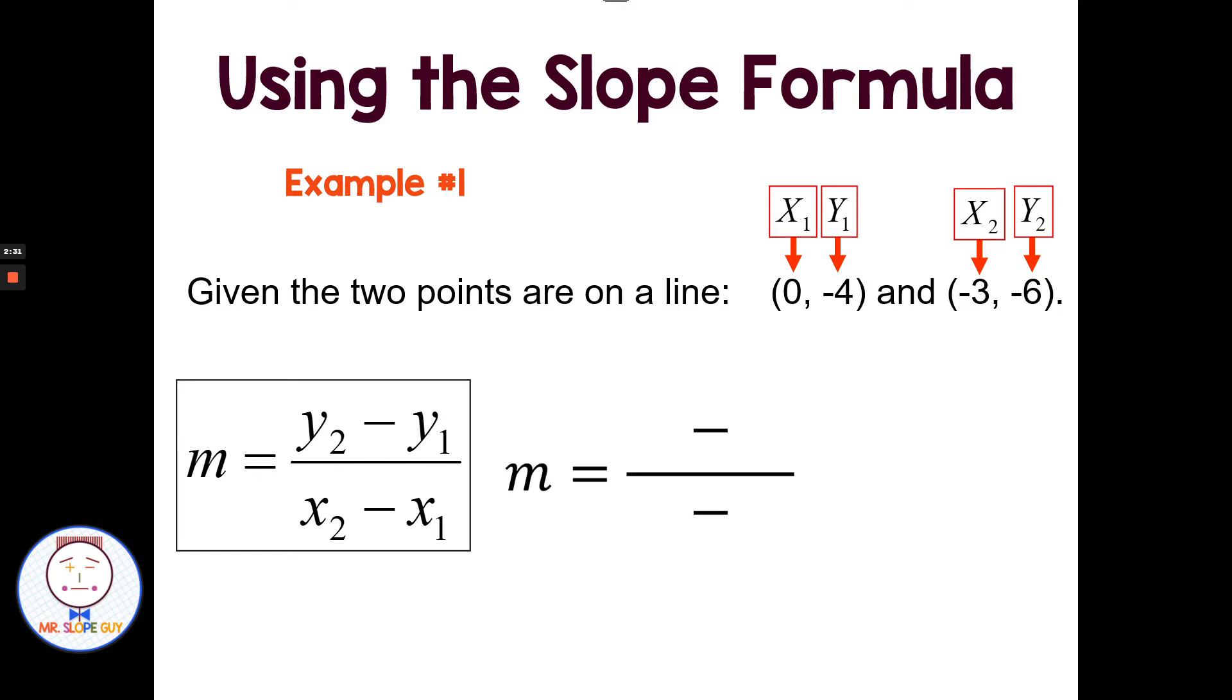The slope formula will always have subtraction on the top, subtraction on the bottom as part of the formula. Then I'm going to replace these subscripts, these y sub 2, y sub 1, that are just fancy variables. There's no actual multiplication or they're not the same as an exponent. They're just a fancy variable to denote you have an x and y of a first point and a second point with a second x and a second y. So when we substitute in, our y sub 2 is -6, and our y sub 1 is -4. On the top we have -6 minus -4. And in the denominator, I have the x sub 2 of -3 minus the x sub 1 of 0.